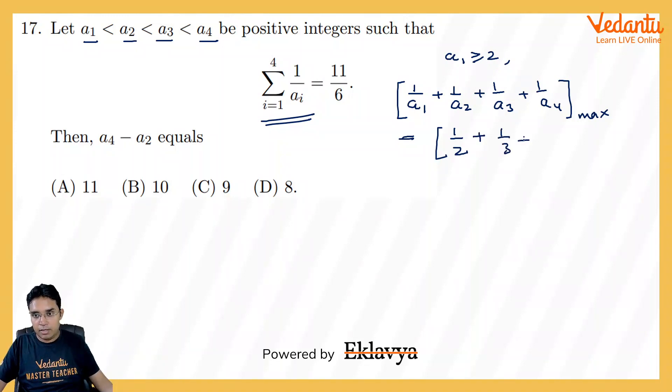Then this will be 1 upon 3, then this will be 1 upon 4, this will be 1 upon 5. And if you add them, I think you will have to take the LCM which will be 60. So here it is 30, this is 20, this is 15 and this is 12. So you will be getting this to be 50, 65, 77 upon 60.